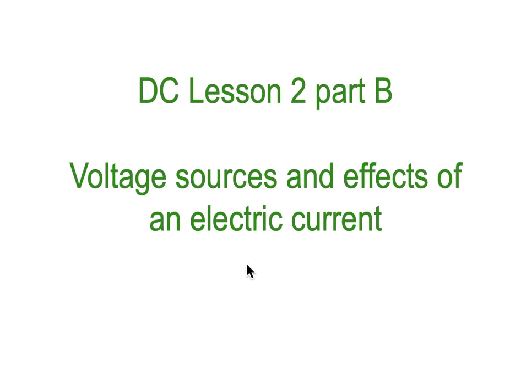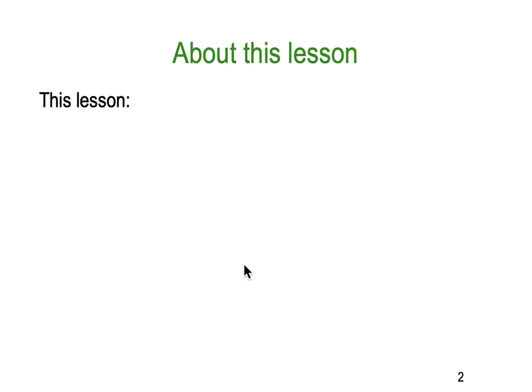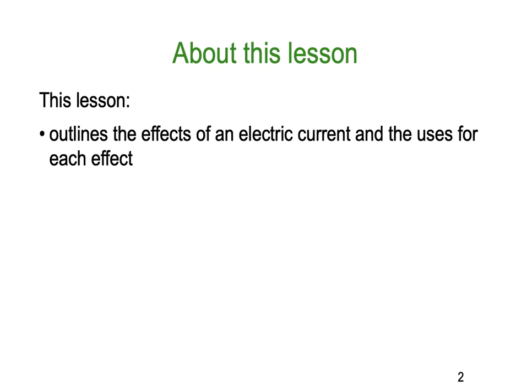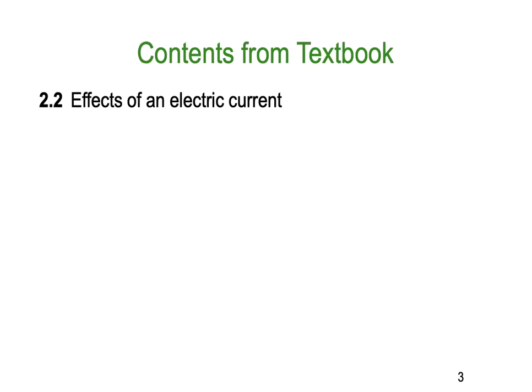Hello and welcome to DC Lesson 2, Part B. Dr. Ken with you here. About this lesson, we're going to outline the effects of an electrical current and the uses for each effect. In Lesson A, we looked at how we produce those electrical currents. Now we're going to look at how we use them. From the textbook, Electrical Principles by Phillips, this is section 2.2 if you want to have a look at some of the other pictures and text there.